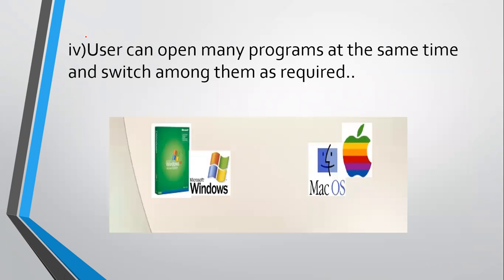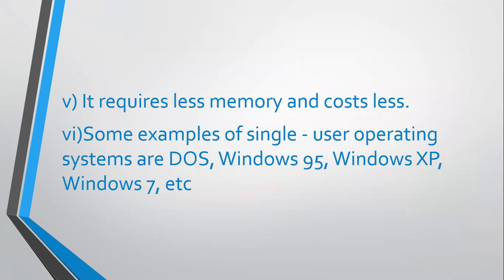A user can open many programs at the same time and switch among them as required — for example, Word, Excel, database, recordings, or video. It requires less memory and costs less, because it allows only one user to use the operating system at a time.